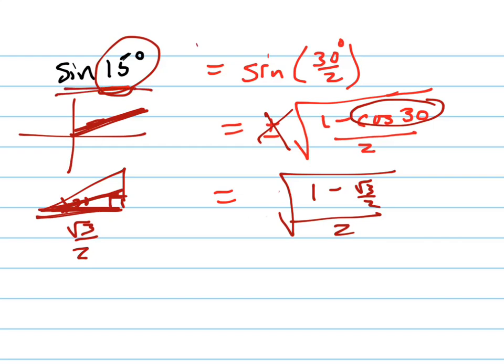So that's how you know whether to use plus or minus. Now let's simplify this. This becomes, with a common denominator of 2 over 2, equal to 2 minus root 3, all over 2, all over 2.